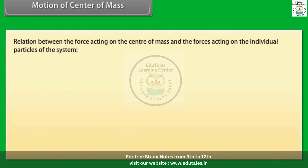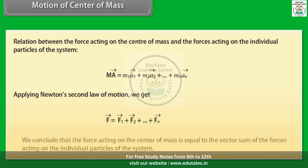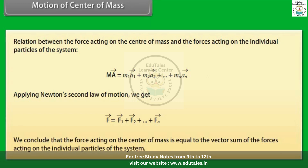The relation between the force acting on the center of mass and the forces acting on individual particles of the system is: MA⃗ = M₁A⃗₁ + M₂A⃗₂ + ... + MₙA⃗ₙ. Applying Newton's second law of motion, we get F⃗ = F⃗₁ + F⃗₂ + ... + F⃗ₙ. We conclude that the force acting on the center of mass is equal to the vector sum of the forces acting on the individual particles of the system.